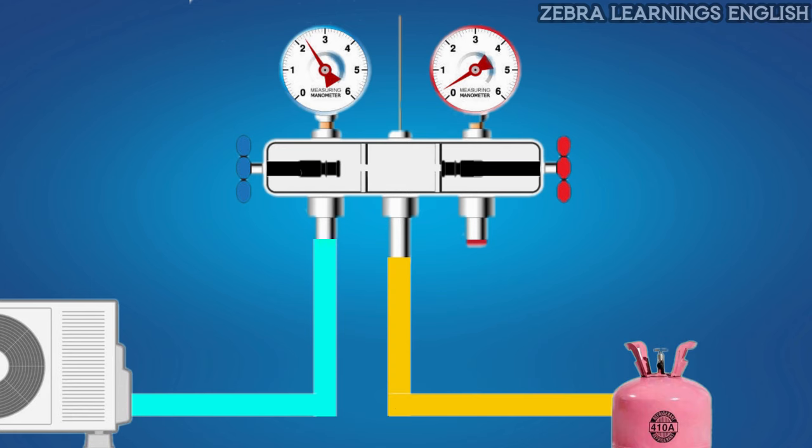To charge the refrigerant in the unit, connect the yellow hose to the refrigerant cylinder and connect the blue hose to the low pressure side of the unit, and when you open the valve, the refrigerant will go from the cylinder to the unit.